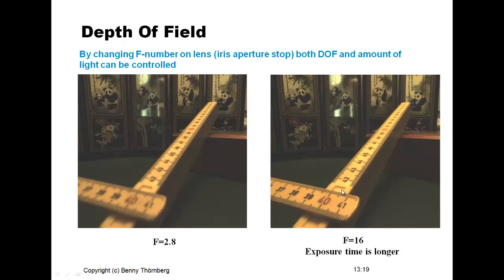In both images the optimal focus appears to be set somewhere in the middle of the millimeter scale. On the left side, particularly on the closer parts, the contrast is much less than in the right image with the higher F-number, demonstrating increased depth of field with a smaller aperture. The intensity of the two images appears about the same because a larger exposure time was used for the smaller aperture image.